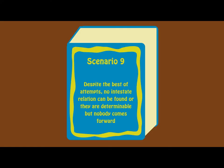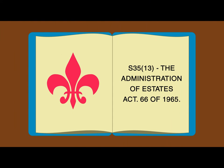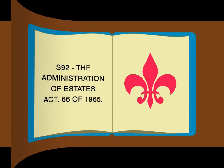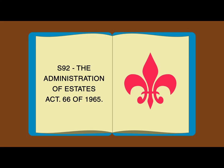In the final scenario, we have a situation where no intestate relation can be found, or they are determinable but nobody comes forward. Where the person dies intestate without anyone who could inherit his estate, the estate is forfeited to the state after 30 years from the date when the person became entitled to the money. Section 35(13) of the Administration of Estates Act stipulates that the executor of the estate has to pay to the Master of the High Court a deposit into the guardian's fund on behalf of the persons entitled thereto any monies which he has, for any reason, been unable to distribute in terms of the liquidation and distribution account. In terms of section 92, the money in the guardian's fund that has not been claimed in 30 years will be forfeited to the state.